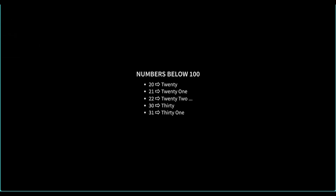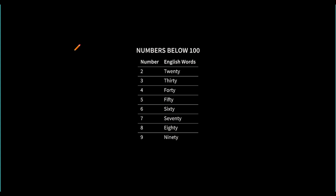For numbers from 20 up to 99, we create a separate hash table for tens — that is 20, 30, 40, etc. When we see 21, we get the corresponding value for 2 which is '20' from the tens map, and for 1 we already have it in the below-20 map. Note that we store 'forty' spelled f-o-r-t-y, not f-o-u-r-t-y, to avoid errors in LeetCode test cases.